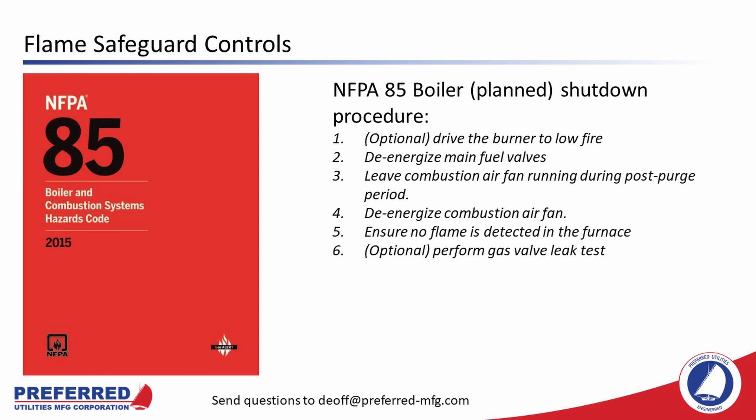A planned boiler shutdown can be performed if the boiler water level goes below the first low-water cutout switch, or if the steam pressure goes above the operating steam pressure or hot-water temperature switch. The planned shutdown procedure as dictated by NFPA 85 is: first, optionally drive the burner to low fire; then the flame safeguard de-energizes the main fuel valves and leaves the combustion air fan running for about 25 seconds for post-purge; then it de-energizes the combustion air fan and ensures no flame is detected. This optional drive-to-low-fire function is called assured low fire cutoff, and it reduces thermal shock on the boiler.